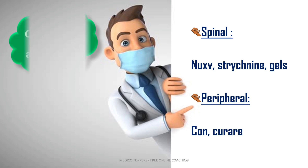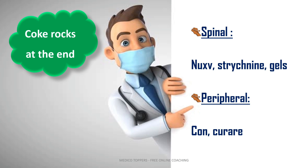How can we remember this? Use the mnemonic 'Coke rocks at the end' — we used to take coke at the end of a meal. So: CO for conium and KE for curare. Conium and curare are the peripheral poisons; all others are spinal poisons.